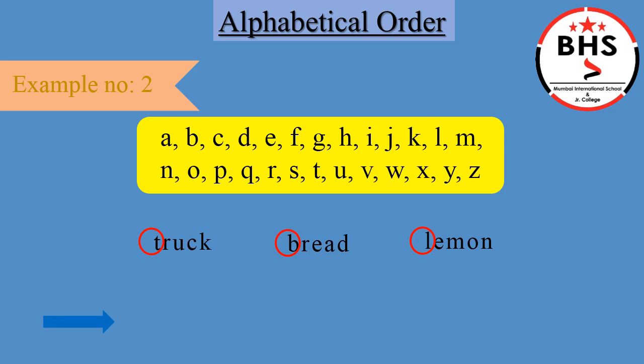Children, now you find which letter comes first in A to Z — T, B, or L. Which letter comes first in A to Z? Yes, B. We have a word bread, which is starting with B. Now, the letters left are T and L. Children, from these two letters, which letter comes first in A to Z? T or L? Yes, L. We have a word lemon, which is starting with L. Our last letter is T. We have a word truck, which is starting with T. We have arranged these words alphabetically.